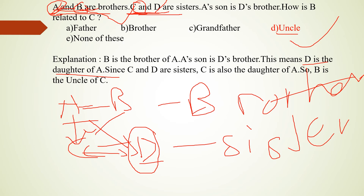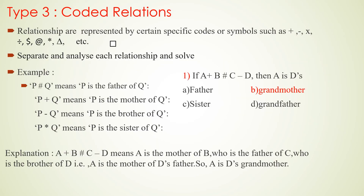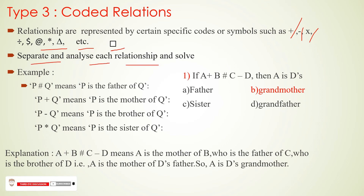Now this is Type 3: coded relation. In this type, the relation is represented by a symbol. The symbols used can be plus (+), minus (-), multiply (*), and divide (/). You separate and analyze each relation and solve it step by step.